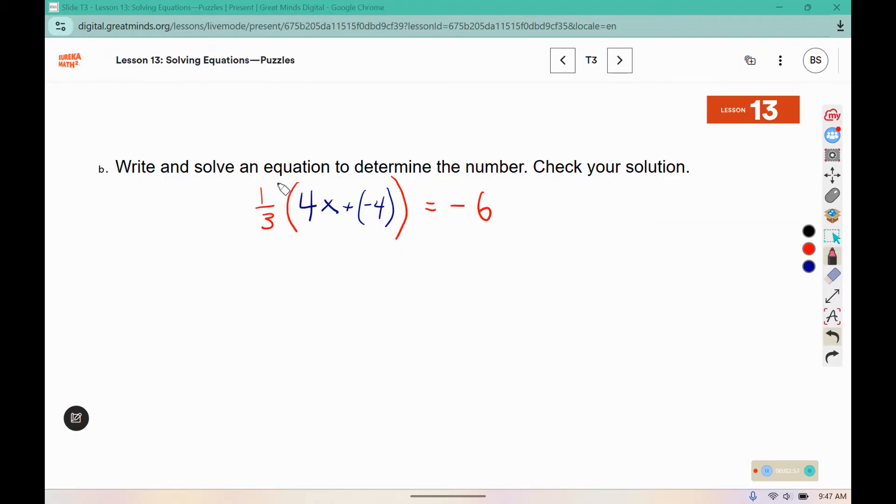Now to solve this, we're going to use the distributive property as our first step. One third of 4 is 4 thirds x, a third of negative 4 is negative 4 thirds. Oh, nope, the third doesn't go with the negative 6 because it's only what's inside the parentheses, so that still equals negative 6.